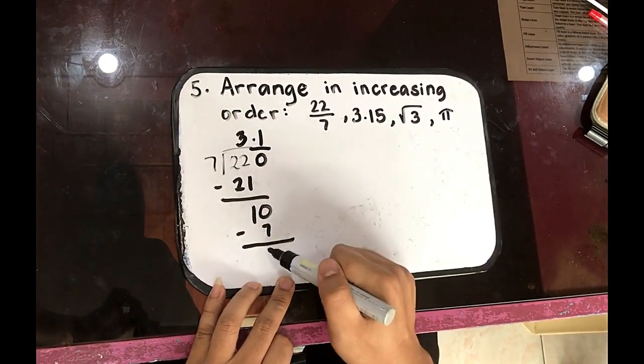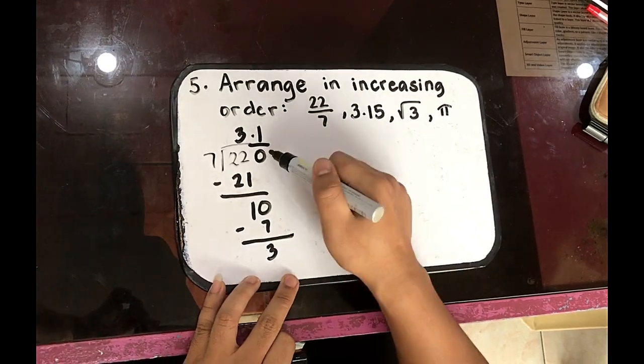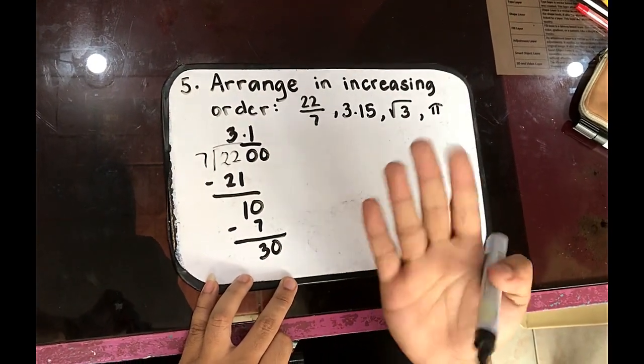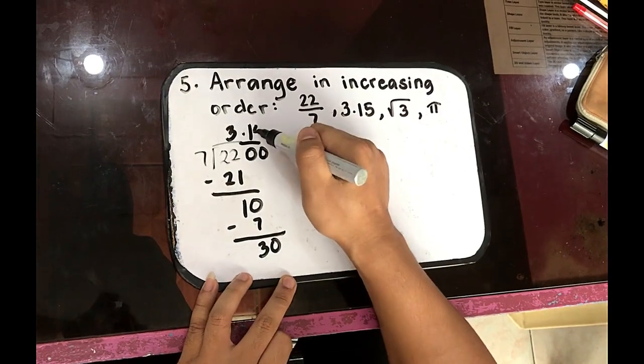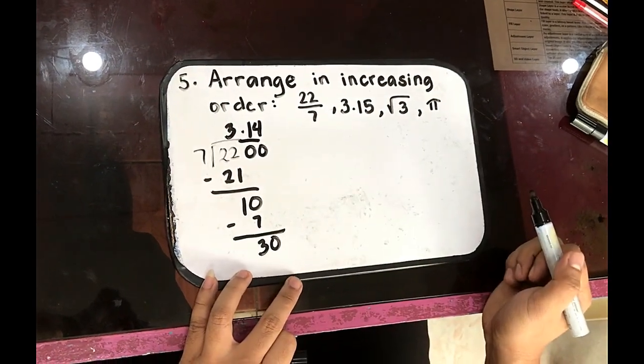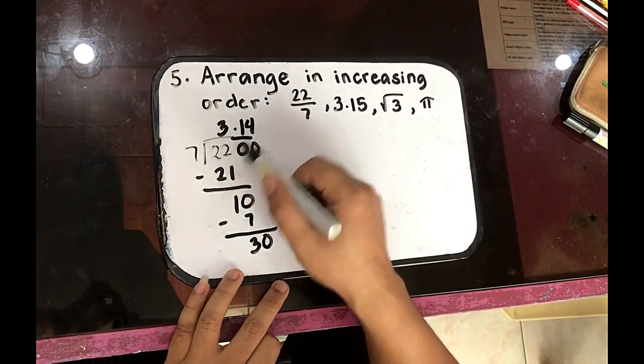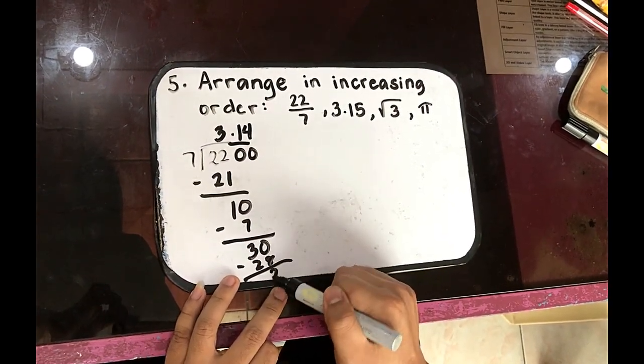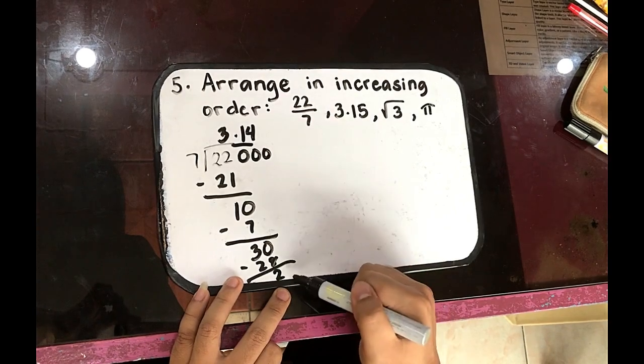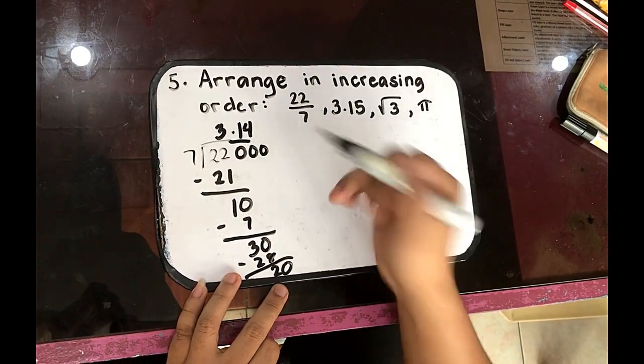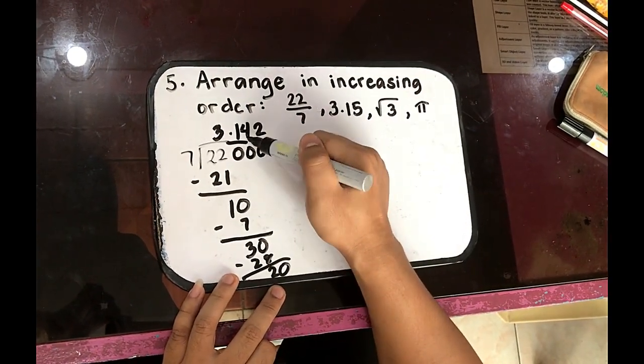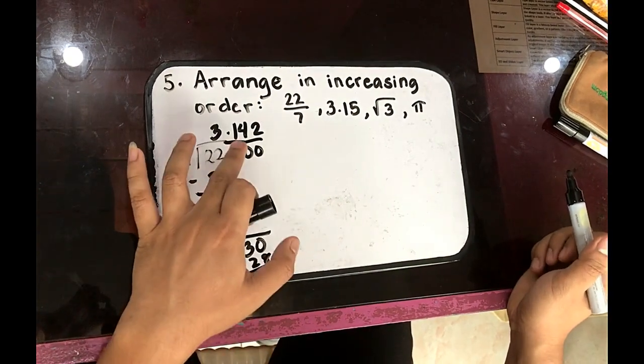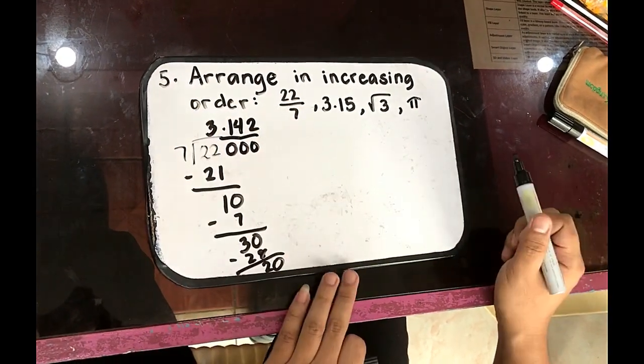So subtract 3, 0, 0, 7, 14, 21, 28. So 3.14, 28. So subtract, 2, 0, 0, 0. So 3.142, 22 over 7.